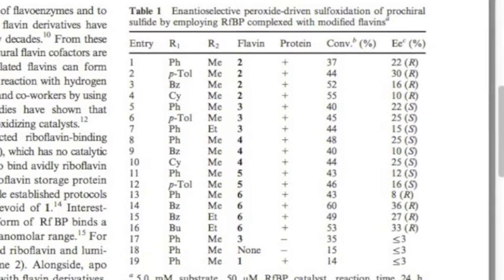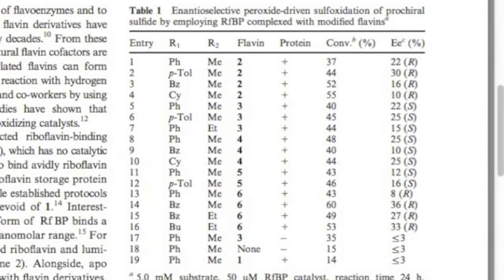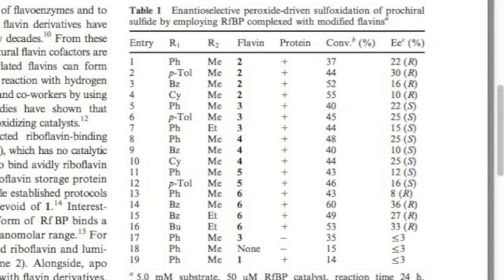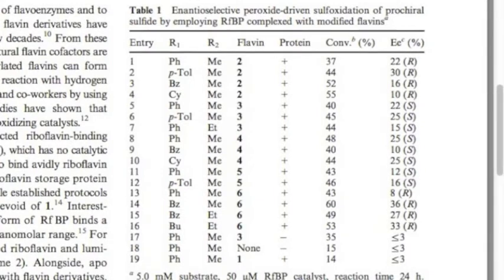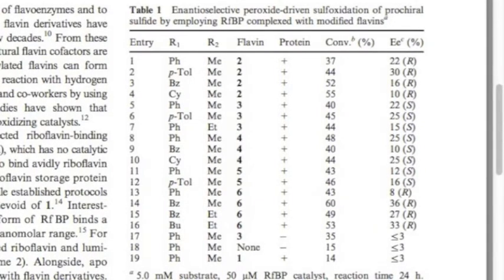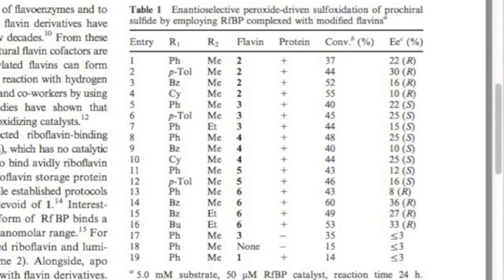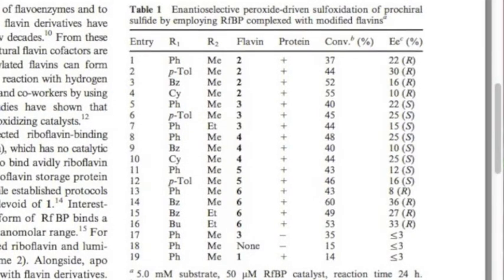In Table 1, we can see where different R1 groups were tested and the results of how efficient each one was at bypassing the NADPH reduction step. Entry 14, BZ, proved to be the most efficient with a value of 60%. Entry 16, BU, was a close second with 53% efficiency.